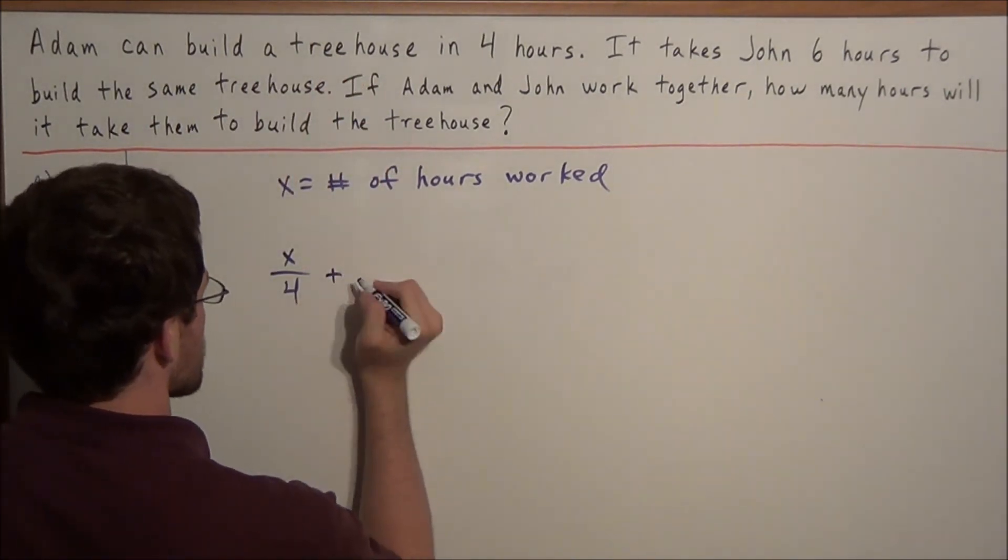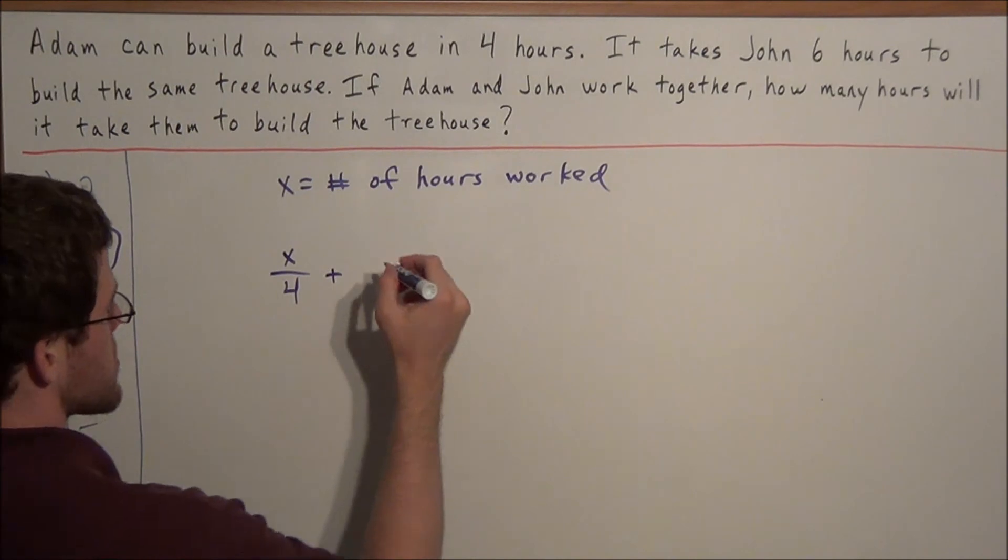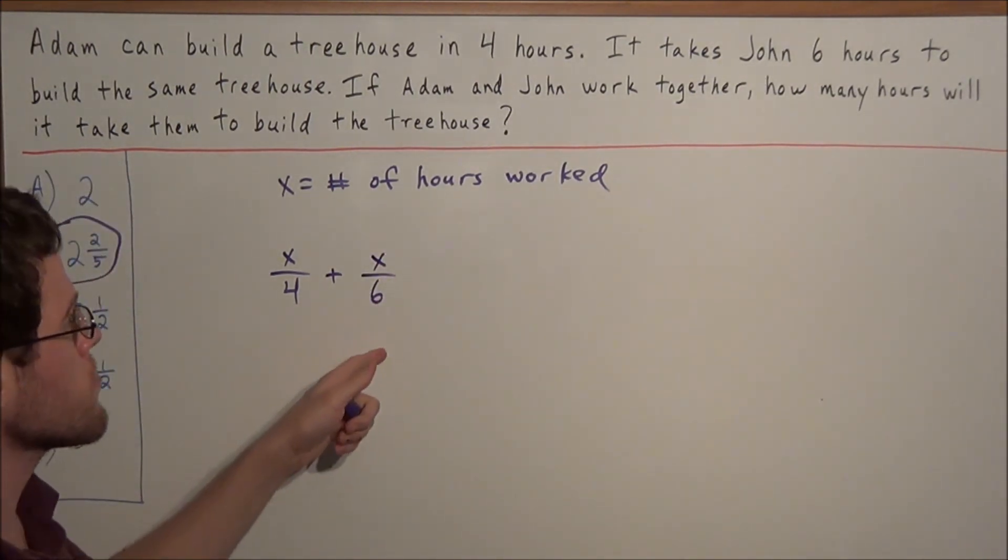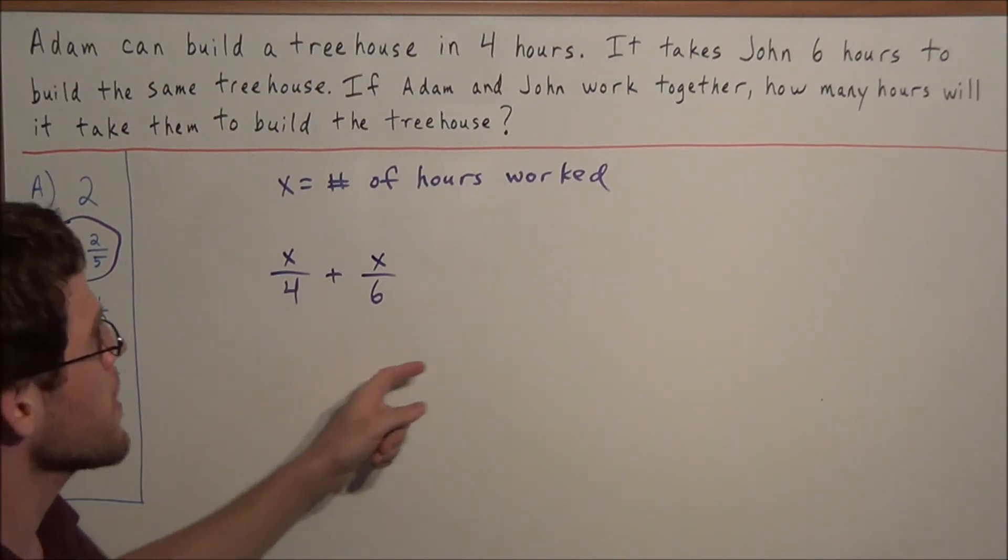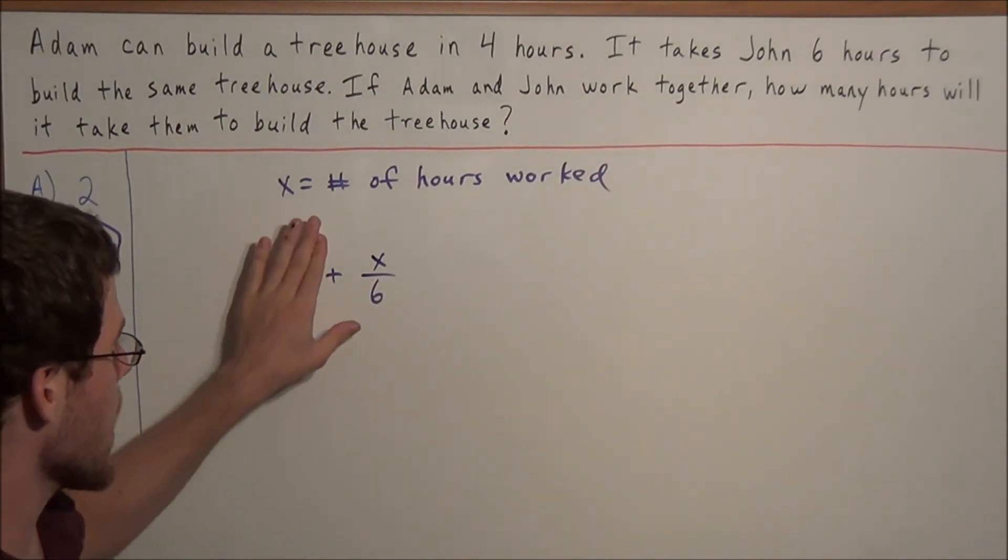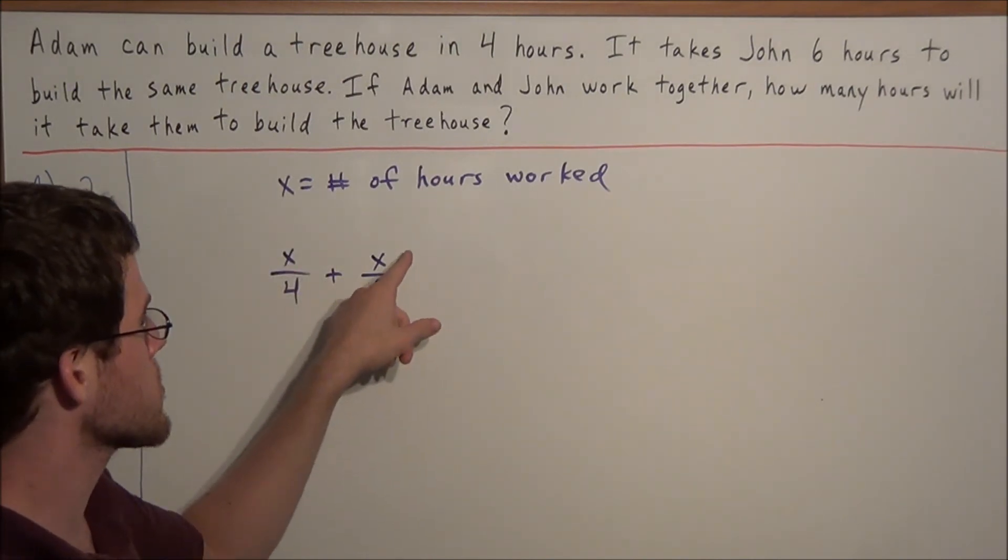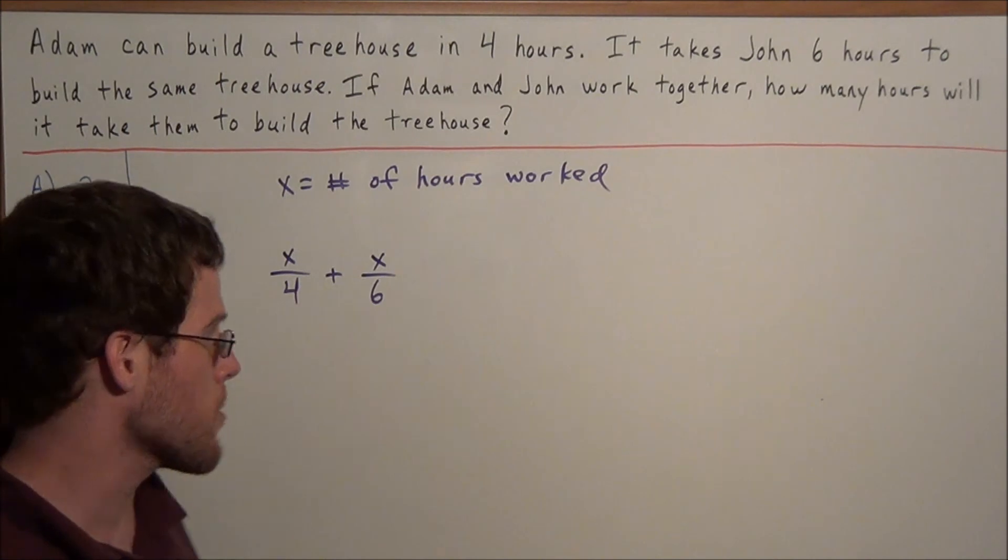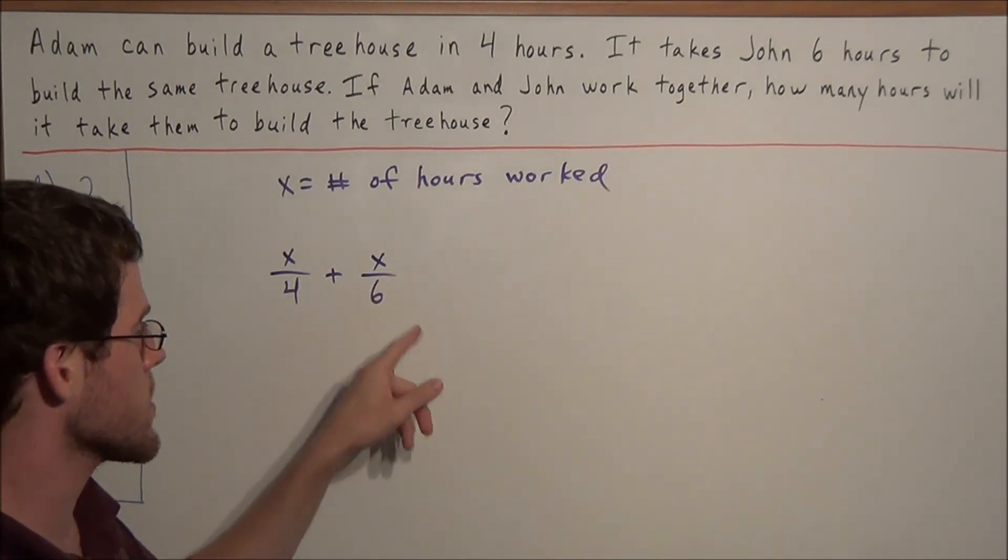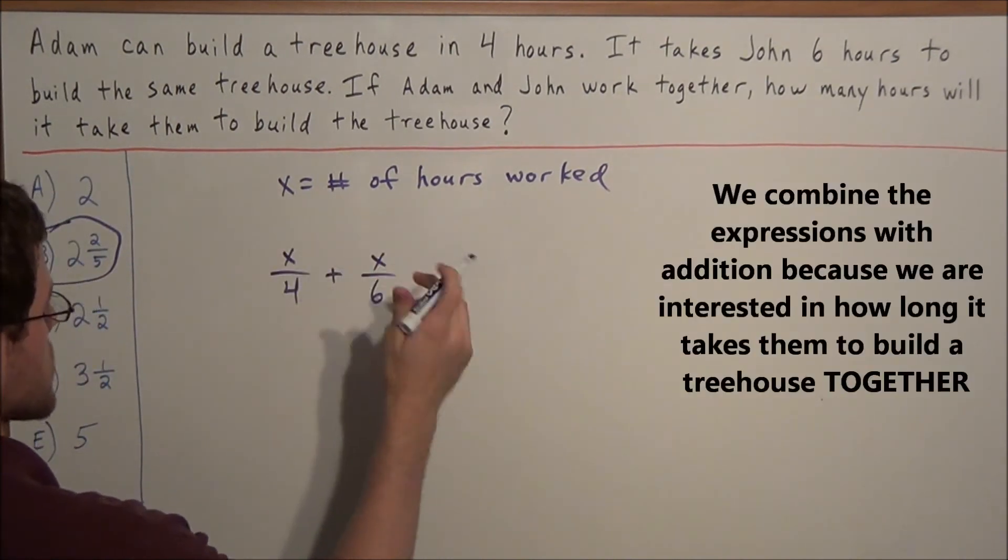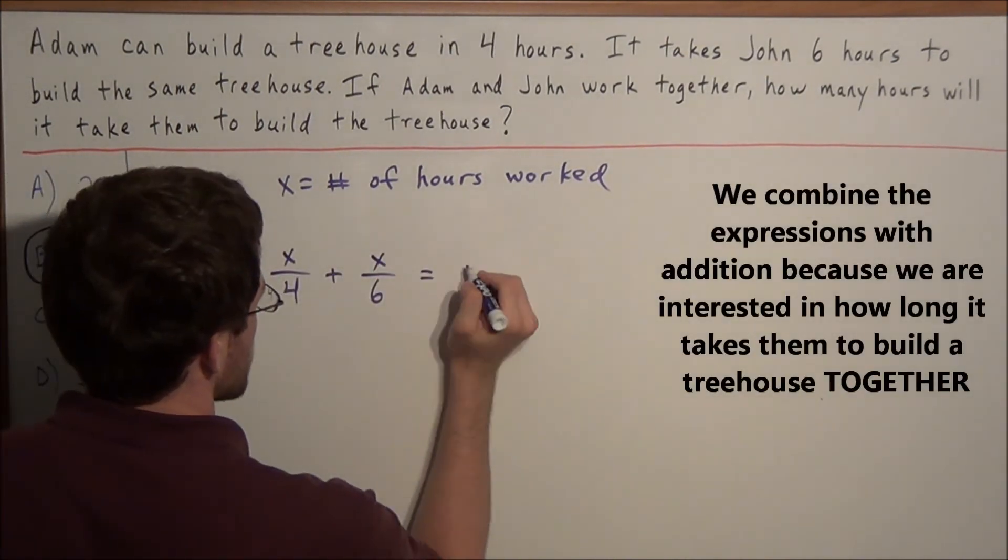And now we add to this x over six, where x over six represents the part of a house that John builds for x hours. For instance, if six hours goes by, John builds six divided by six, or one house. If twelve hours goes by, he's built twelve divided by six, or two houses. So now when we combine these two expressions by addition, and we set them equal to one.